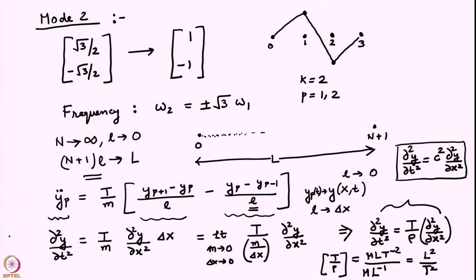We had applied the limit of capital N, the number of masses, going to infinity. If we put more and more masses between 2 walls separated by a fixed distance L, then the gap between the masses goes to 0. So N→∞, small l→0, in such a way that (N+1)·l remains fixed at capital L. In this limit, the ordinary differential equations governing the pth mass go over to the linear wave equation: ∂²y/∂t² = (T/ρ)·∂²y/∂x².